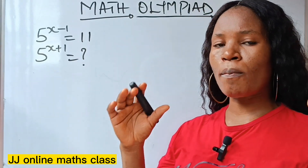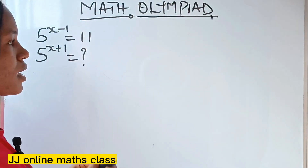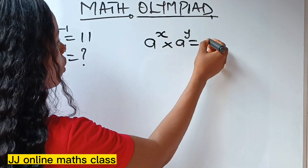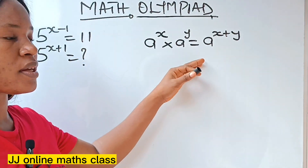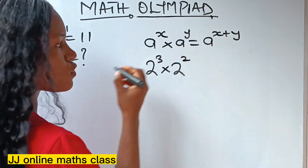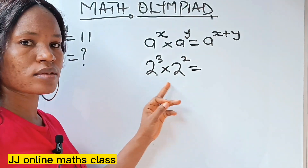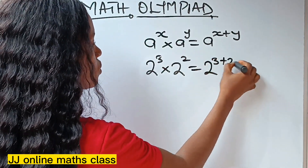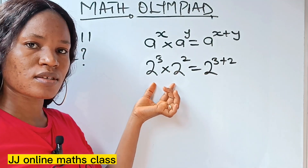First of all, I need us to go back to our laws of indices. In the law of indices, remember that it says a to the power of x multiplied by a to the power of y is equal to a to the power of x plus y. For example, if you have 2 to the power of 3 multiplied by 2 to the power of 2, since they have the same base, all you need to do is pick one base and add the powers — 3 plus 2. So when you have something in this form, you can rewrite it in this form.